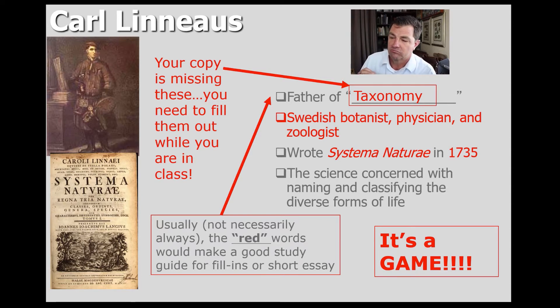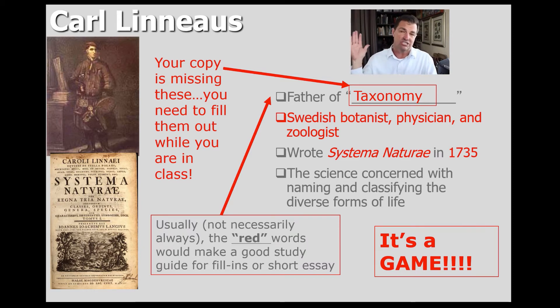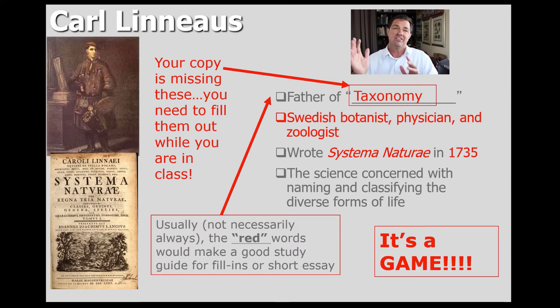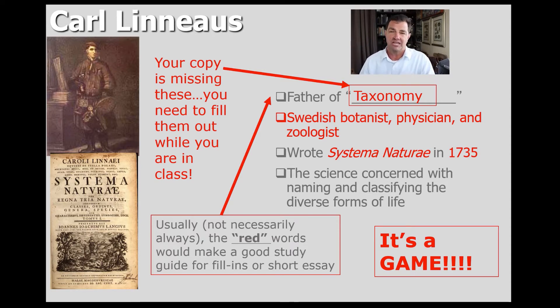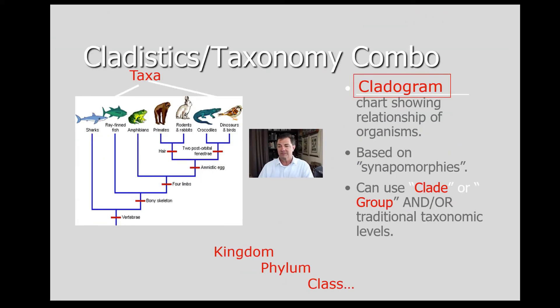Carl Linnaeus, father of taxonomy, was a Swedish botanist, physician, and zoologist. He wrote Systema Naturae in 1735, and that was sort of the starting point by which we began naming and classifying organisms. We don't do it exactly the same way now, but you'll be familiar with the kingdom, phylum, and class levels.